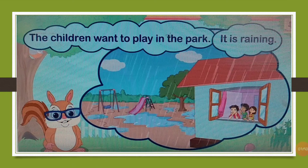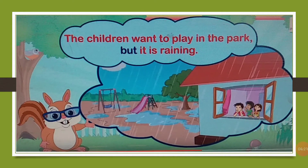Have a look at this picture first. Now read the sentences with me: 'The children want to play in the park. It is raining.' Look at the picture again and tell me — do you find any connection between these two sentences? Yes, these two sentences are telling us two different ideas. That's why we will join them with the conjunction 'but', and the sentence will be: 'The children want to play in the park but it is raining.' In this example, we have connected two different ideas with the conjunction 'but'.